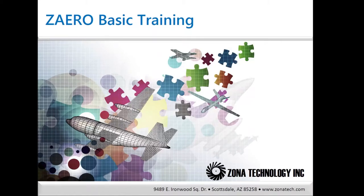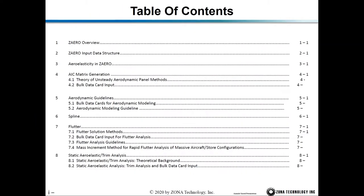ZAERO training consists of two parts. The first one is called basic training and the second one is called advanced training. In the basic training we're going to cover ZAERO overview, ZAERO input data structure, some theory of aero SST in ZAERO, aerodynamic influence coefficient matrix generation, aerodynamic modeling guidelines, spline and flutter, and finally the static aero elastic and trim analysis.